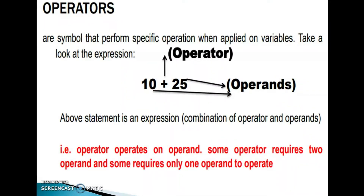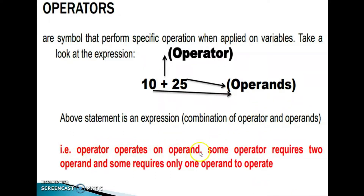We already discussed about these operators. Operators are symbols that perform a specific operation when applied on variables. Take a look at the expression 10 plus 25. From this you can identify 10 and 25 are operands, and plus is the operator. The above statement is an expression — a combination of operator and operands. That is, the operator operates on operands. Some operators require two operands and some require only one operand to operate.